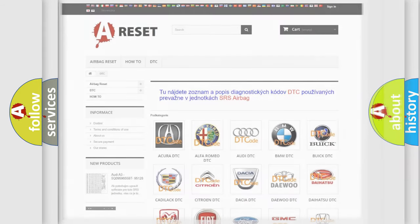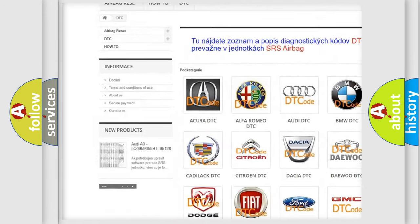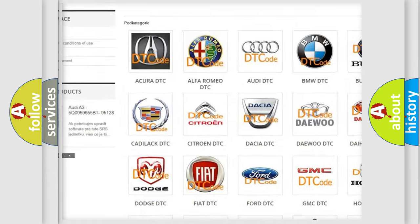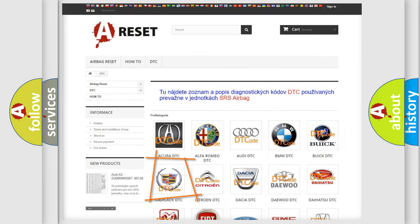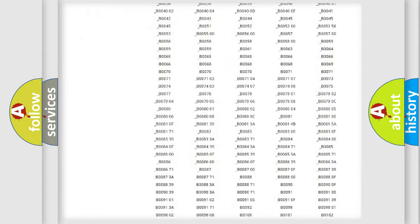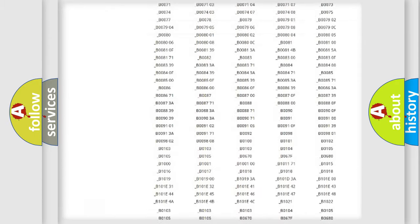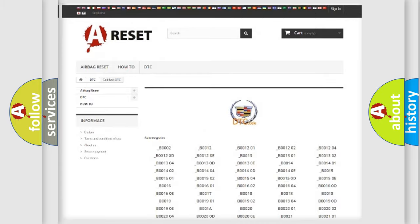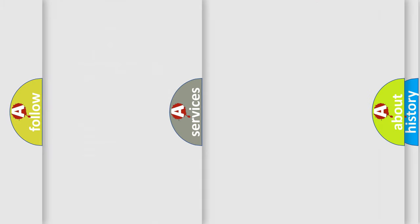Our website airbagreset.sk produces useful videos for you. You do not have to go through the OBD2 protocol anymore to know how to troubleshoot any car breakdown. You will find all the diagnostic codes that can be diagnosed in Cadillac vehicles, and also many other useful things.